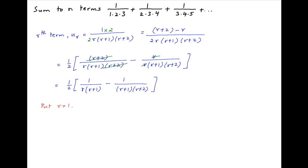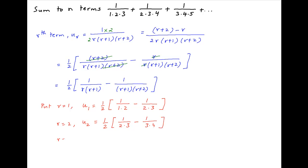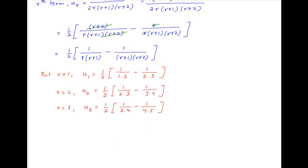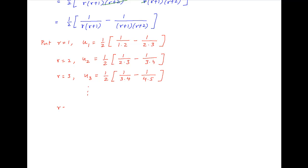Now put r equal to 1: we get u1 equal to half of 1 upon 1 times 2, minus 1 upon 2 times 3. Put r equal to 2: u2 equal to half of 1 upon 2 times 3, minus 1 upon 3 times 4. Put r equal to 3: u3 equal to half of 1 upon 3 times 4, minus 1 upon 4 times 5, and so on. Put r equal to n: un equal to half of 1 upon n times n plus 1, minus 1 upon n plus 1 times n plus 2.